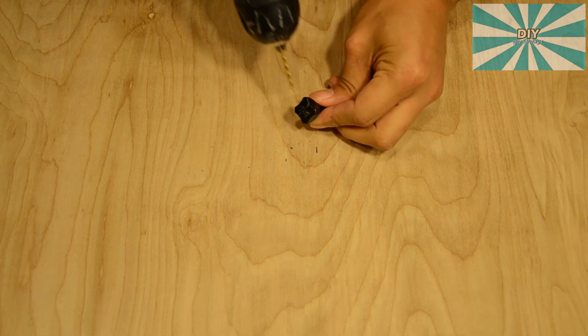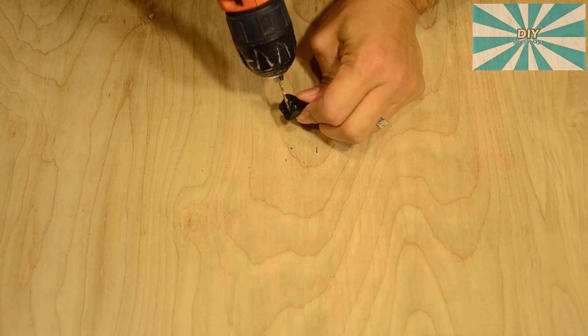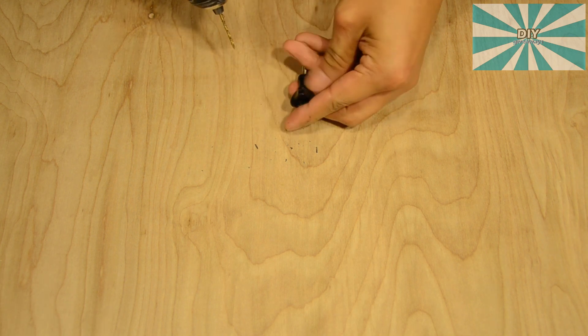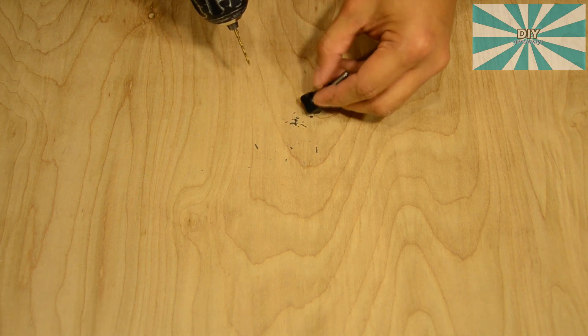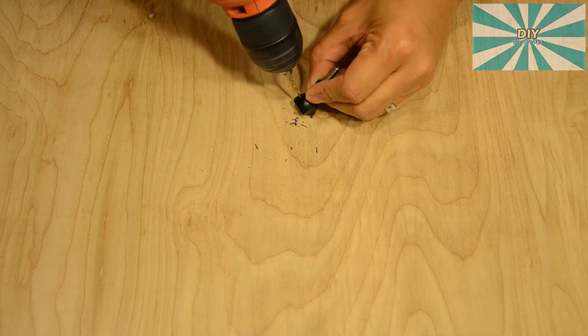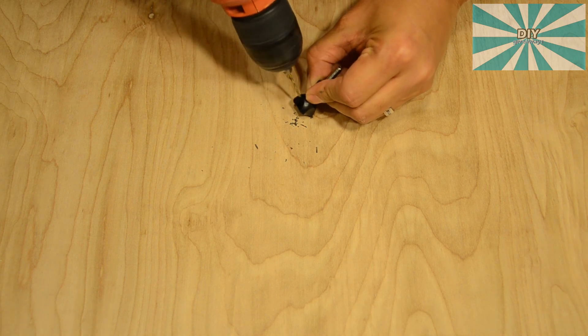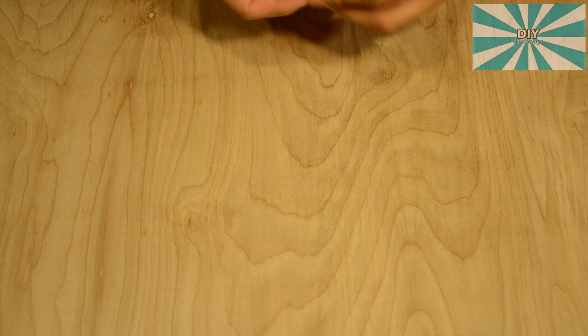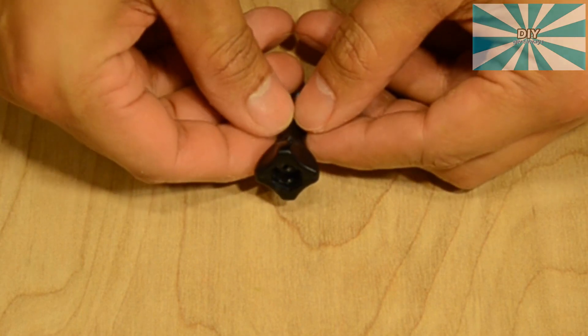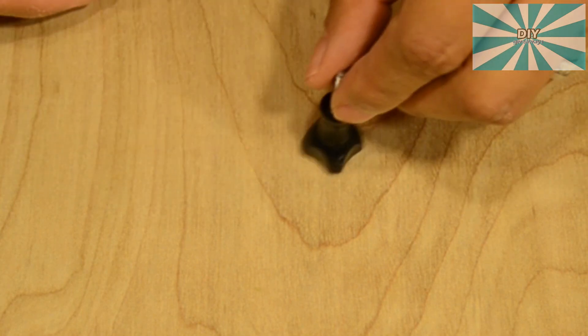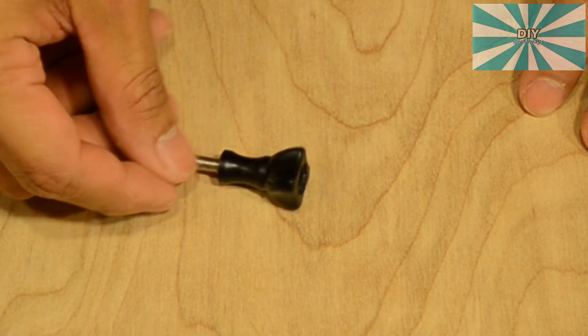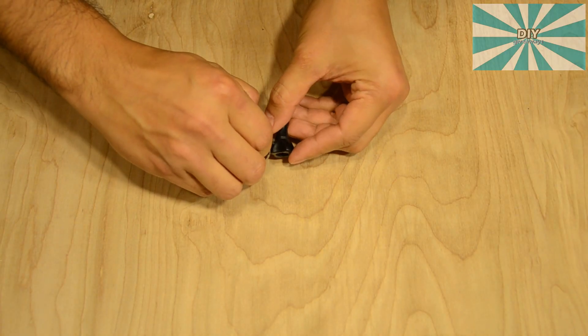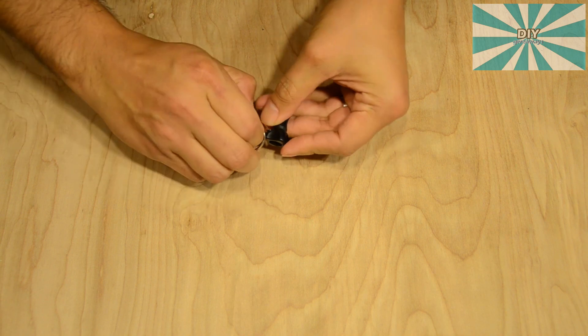We then switch over to a 5/64th drill bit. Finally, insert the keychain ring into the hole and that's it.